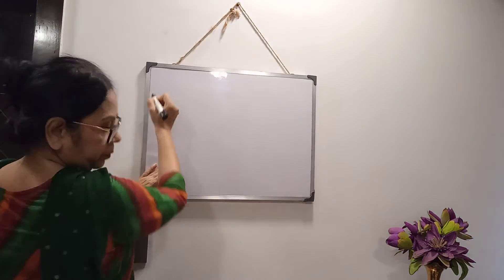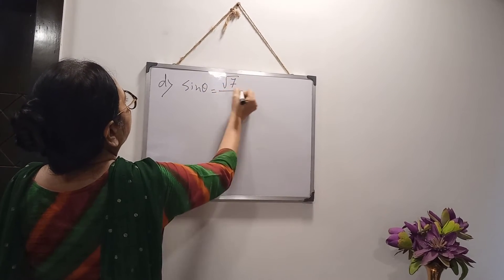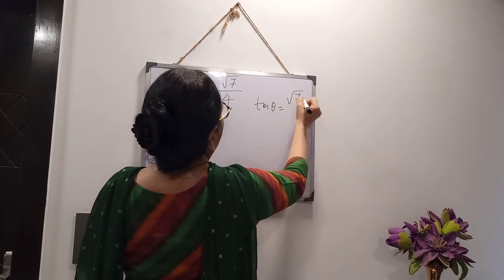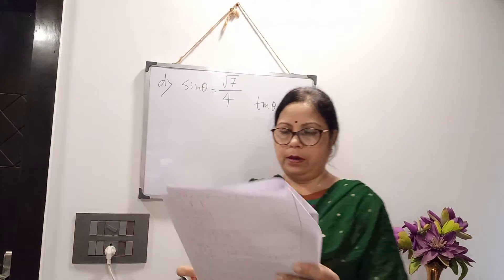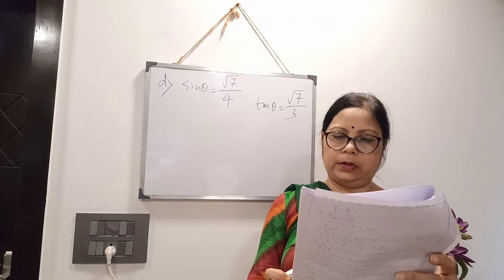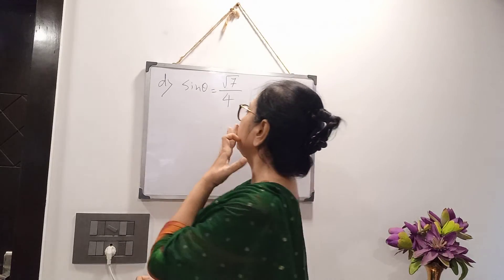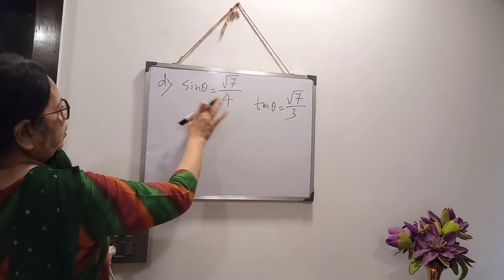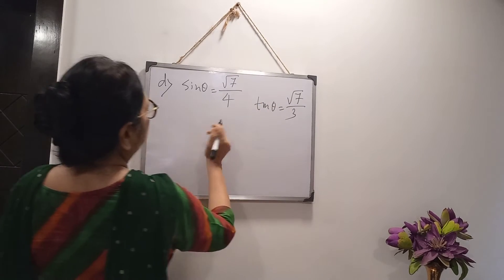Next problem: Can you find angle θ such that sinθ = √7/4 and tanθ = √7/3? We have to check using a formula. There is no direct formula relating sin and tan, so from sinθ we calculate cosecθ, and from tanθ we get cotθ. Then we can apply the formula cosec²θ - cot²θ = 1.